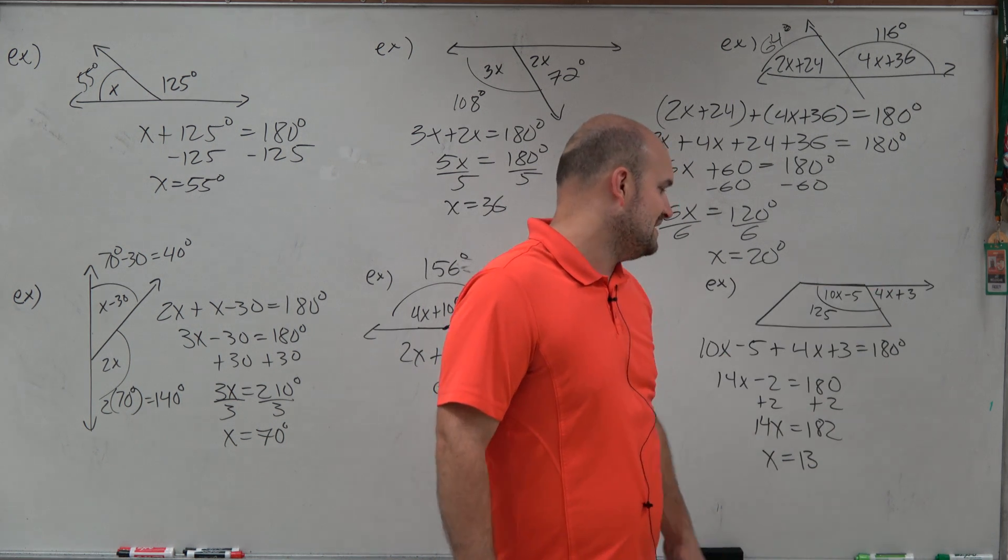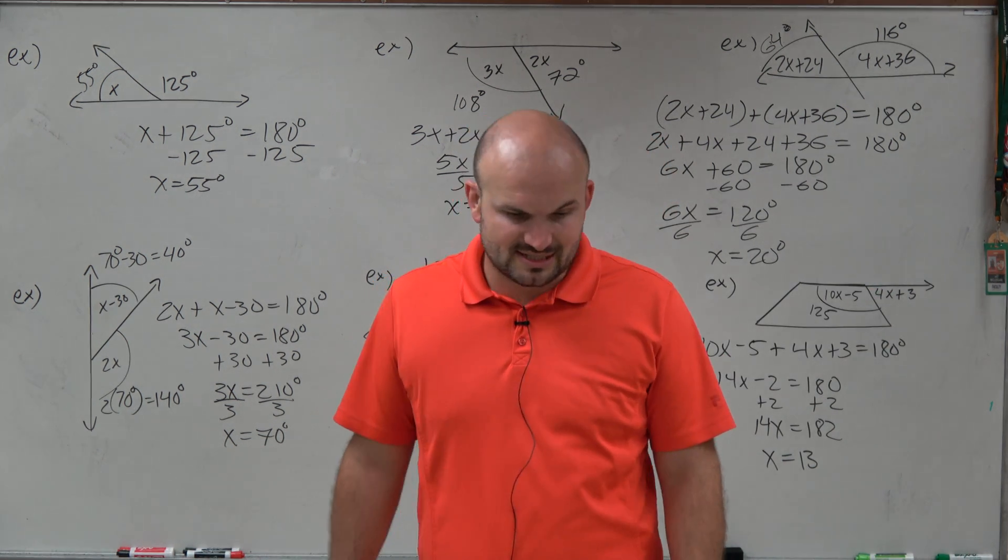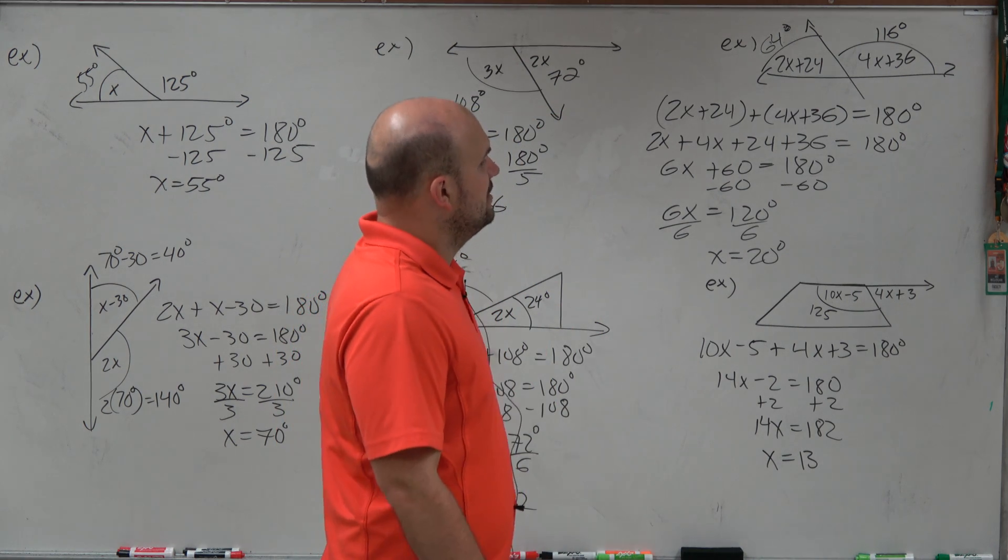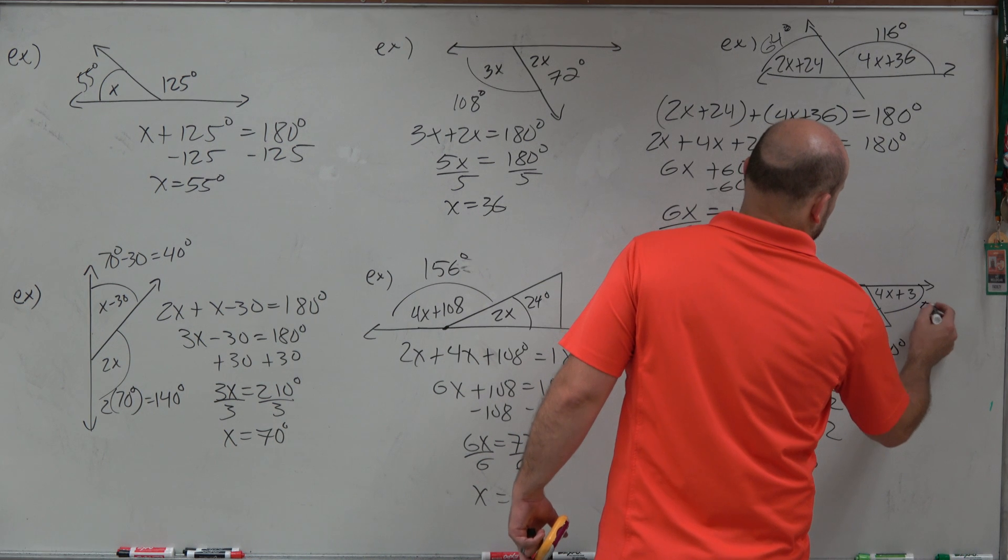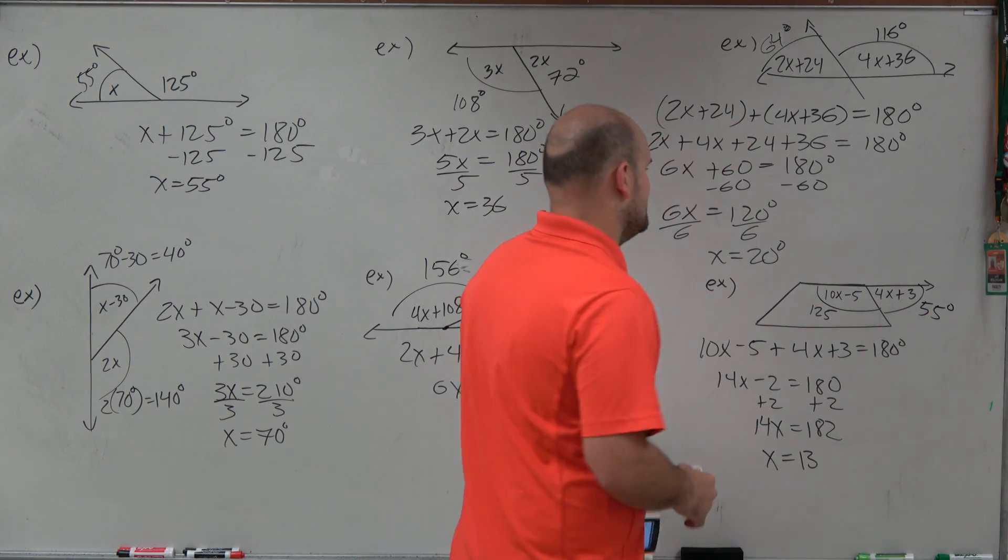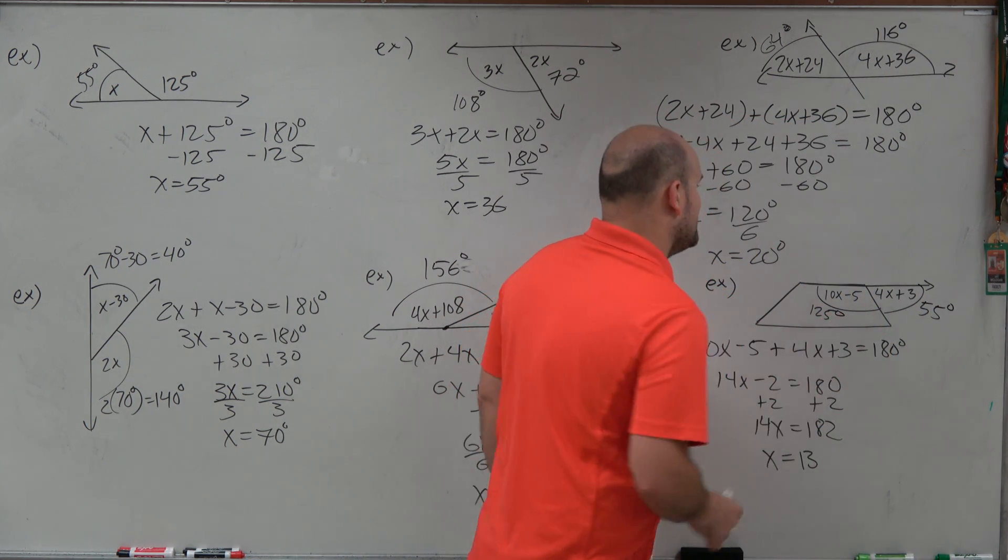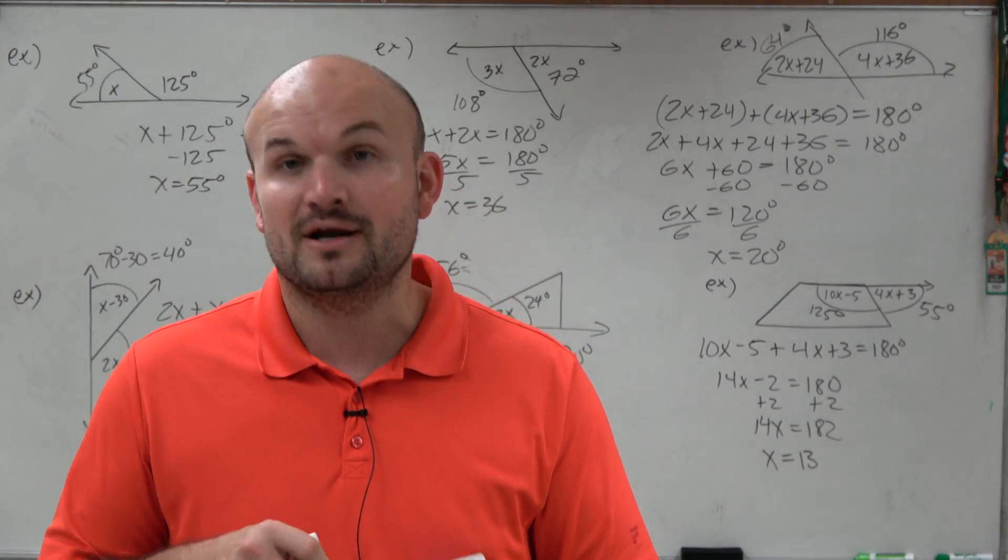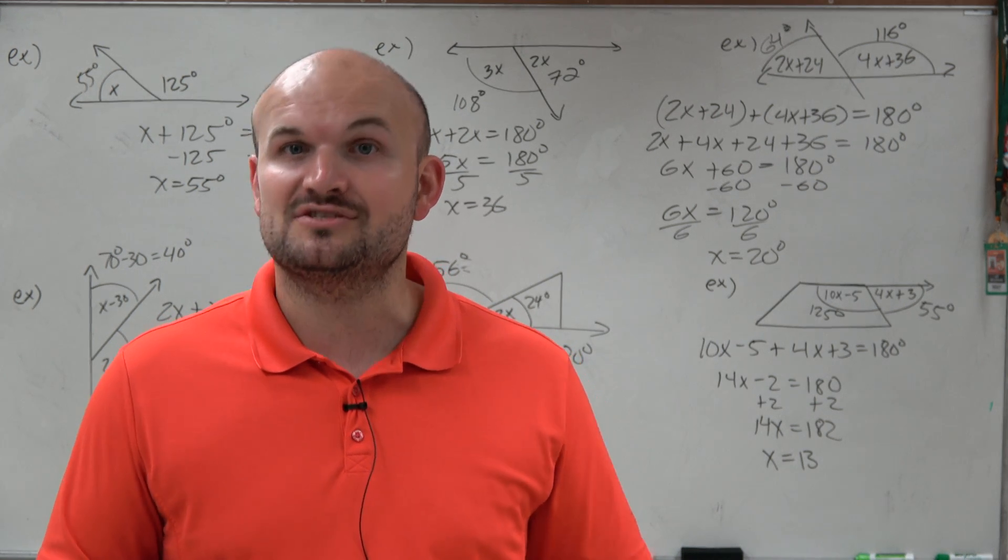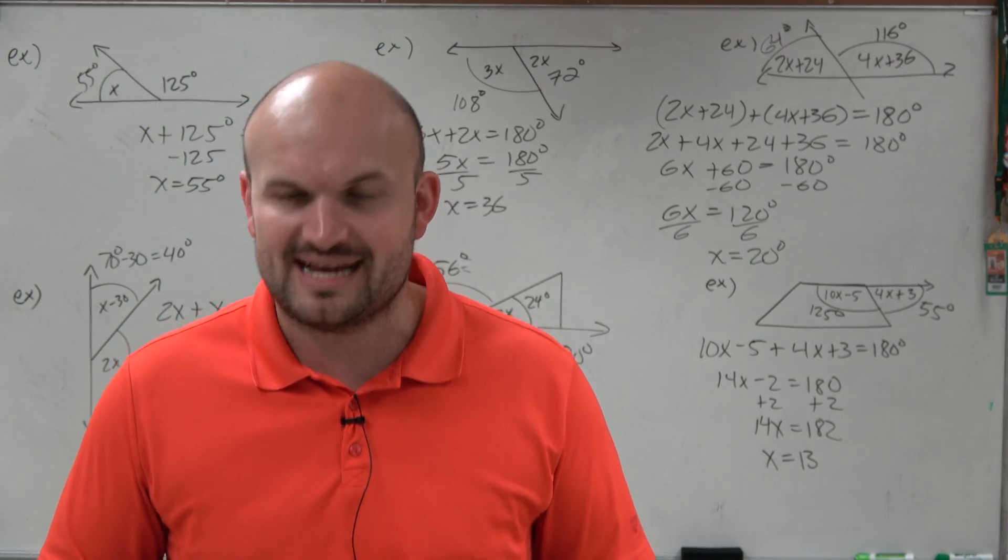4 times 13, that'd be 52, plus 3 is going to be 55. And does 125 degrees plus 55 degrees equal 180? Yes, it does. So there you go, ladies and gentlemen. That is how you solve for your missing variable as well as angles by using supplementary angles. Thanks.